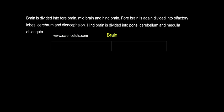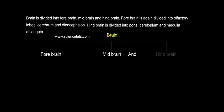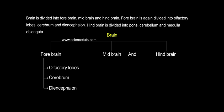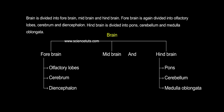The brain is divided into forebrain, midbrain, and hindbrain. The forebrain is further divided into olfactory lobes, cerebrum, and diencephalon. The hindbrain is further divided into pons, cerebellum, and medulla oblongata.